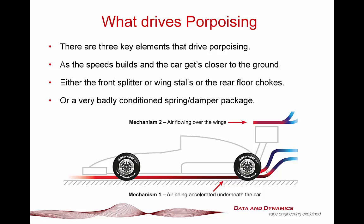Porpoising is a high frequency pitch oscillation that is induced by the aero at speed. Typically what happens is either the front wing chokes — the front pops up, then the downforce re-engages and pushes it back down. Or at the rear, as the car compresses to the ground, the diffuser stalls, cutting off the downforce, sending the rear of the car back up, the downforce re-engages, and you get a high frequency oscillation that at speed can be rather violent.